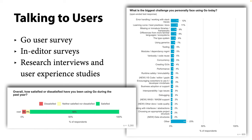Another data source is reading code — we analyze open source Go modules. For example, before adding a new GoVet check, we run it on a subset of the open source corpus and read a random sample of results to see whether the check points out real problems and whether it has too many false positives. For Go 1.22, we're planning to add a GoVet check for calls to append that append nothing at all. All the flagged code snippets we sampled were questionable or outright bugs, so we decided to add the check. Data was much better here than intuition.